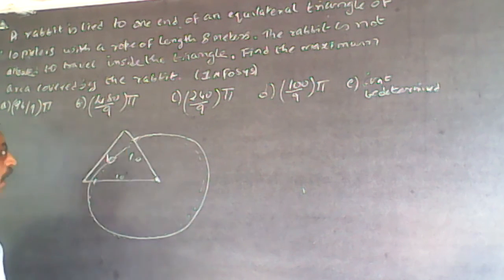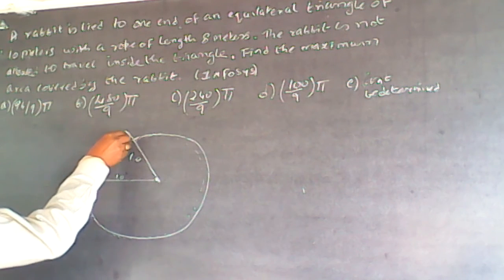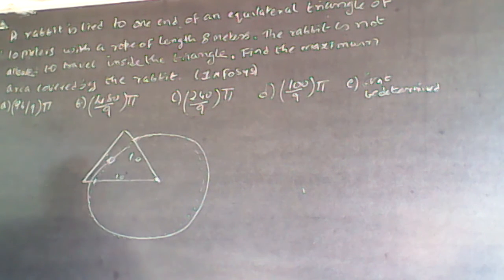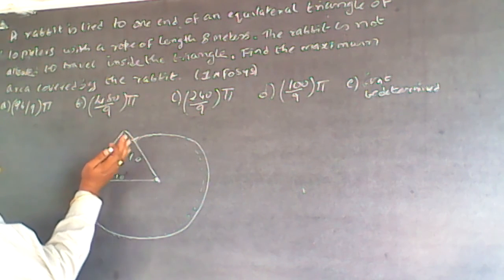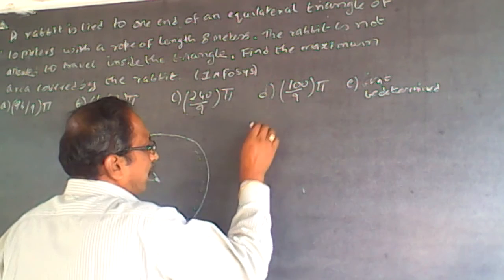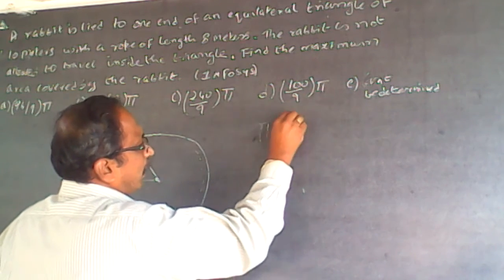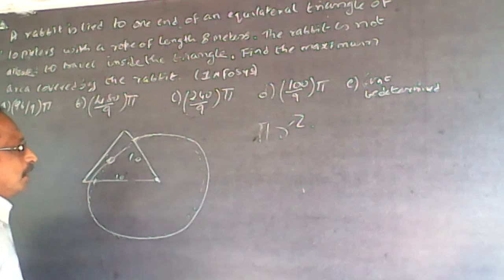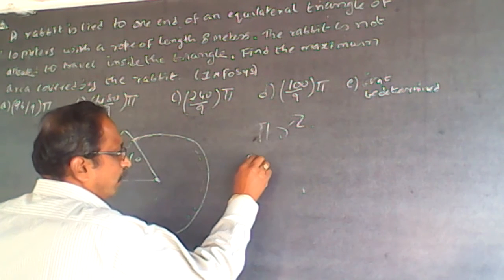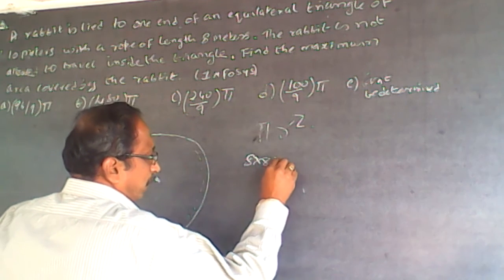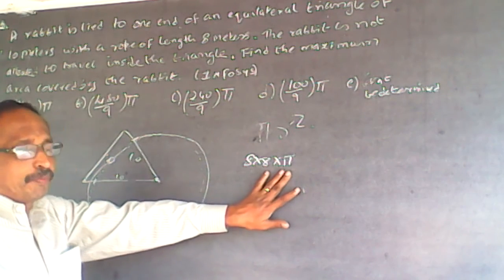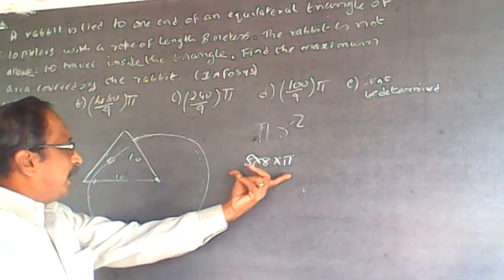Now the rabbit is not allowed to go inside the triangle, so that portion can't be accessed in any case. The area of a full circle is π r². The radius is 8, so the total area it could potentially cover is 8 × 8 × π = 64π.